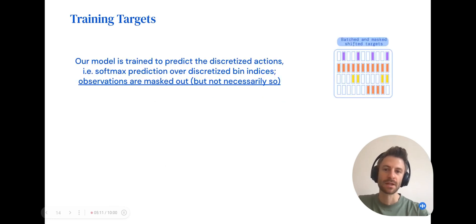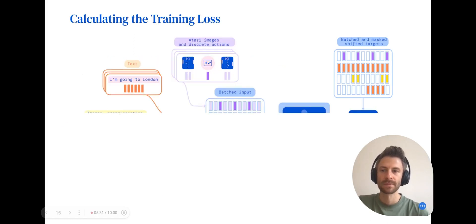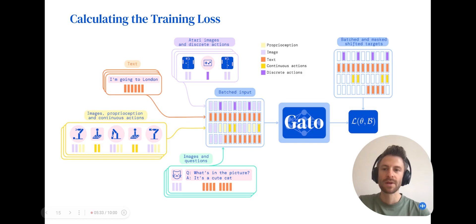The Gato model is trained to predict discretized actions. To create training targets, we right-shift the input data and mask out observations. As a side note, I'd like to point out that we do not actually have to mask out observations. However, at the moment, predicting image targets isn't possible using ResNet image serialization because we don't generate discrete image tokens. We train Gato to minimize the negative log-likelihood of the training targets, which is a standard formulation that's commonly used by transformer language models.